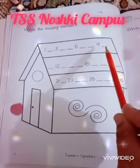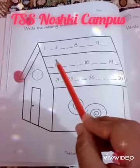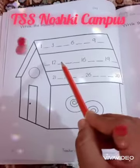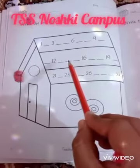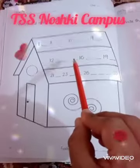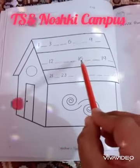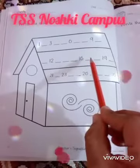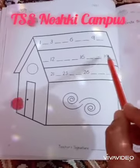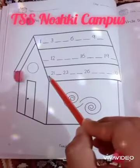After seven, which number will come? Eight. After eight, which number will come? Nine. After nine, which number will come? Ten. After ten, which number will come? Eleven. After eleven, which number will come? Twelve. After twelve, thirteen. After 18, 19. After 19, twenty. After twenty, which number will come?